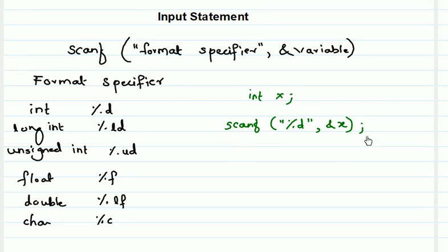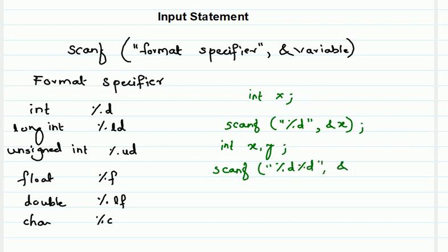If you want to scan values for more than one variable, you can do it using a single statement — you do not need to write two different scanf calls. In that case, you write the format specifier twice: scanf("%d %d", &x, &y). It is compulsory to write a format specifier for each variable, so there must be a corresponding format specifier for each variable. The first %d represents x and the second %d represents y.